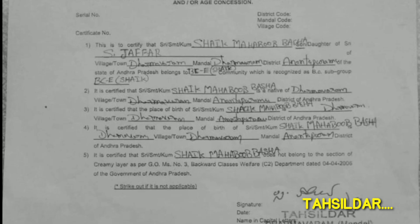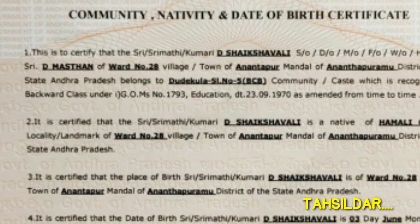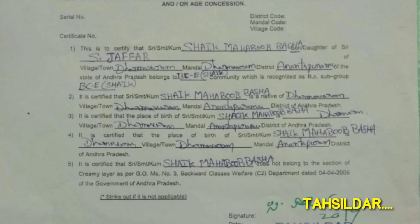BC is backward castes — BC A, B, C, D. They also have a BC certificate. These non-criminal certificates are available to get the non-criminal certificate. In regards to the mandalam, they can get the non-criminal certificate. If you get the non-criminal certificate, you can get the BC reservation.